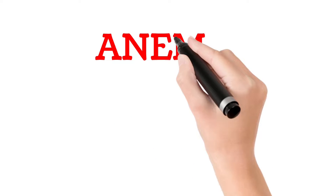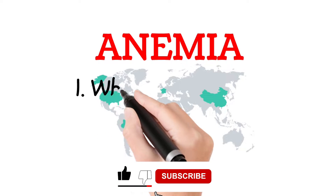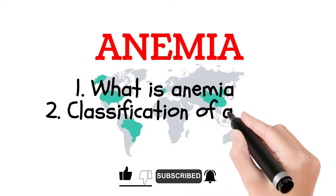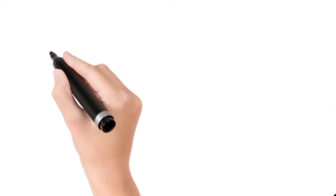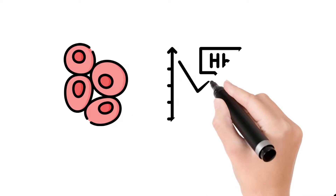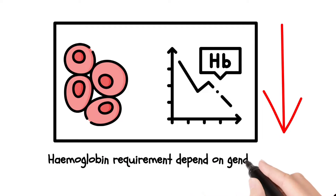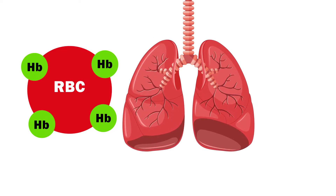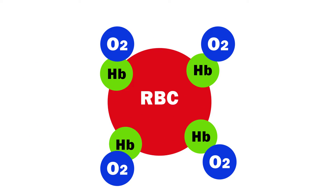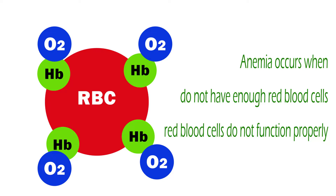Welcome back. Anemia is a serious global public health problem. In this video we will talk about anemia, the classification of anemia, and laboratory investigations for anemia. Anemia is a condition in which the number of red blood cells or the hemoglobin concentration within them is lower than normal. The hemoglobin requirement of individuals may vary depending on gender and age. Hemoglobin is an iron-rich protein carried by red blood cells that attaches to oxygen in the lungs and carries it to tissues throughout the body.